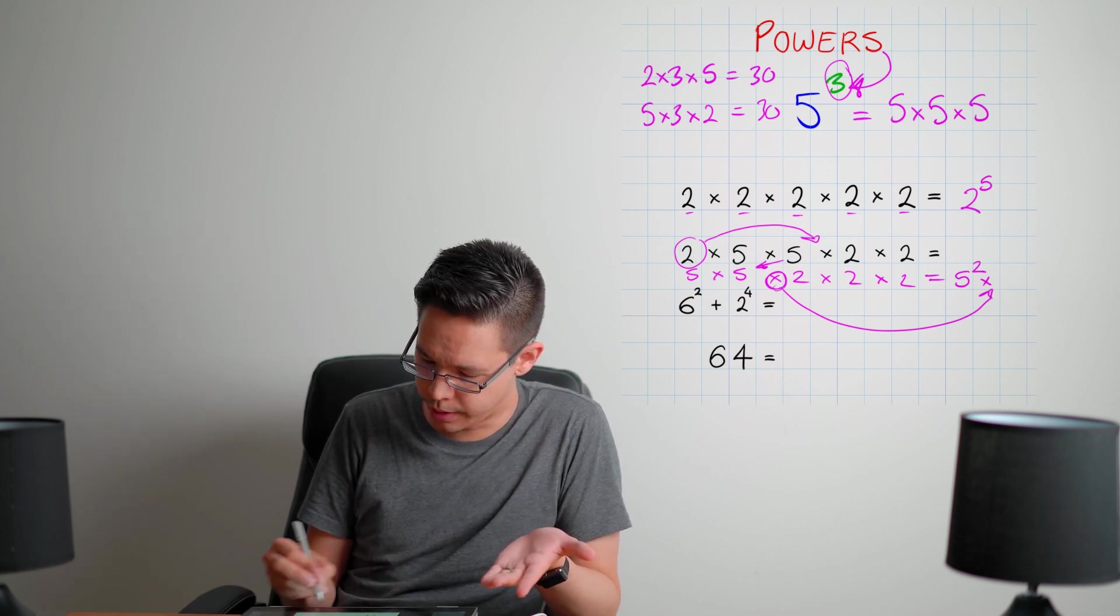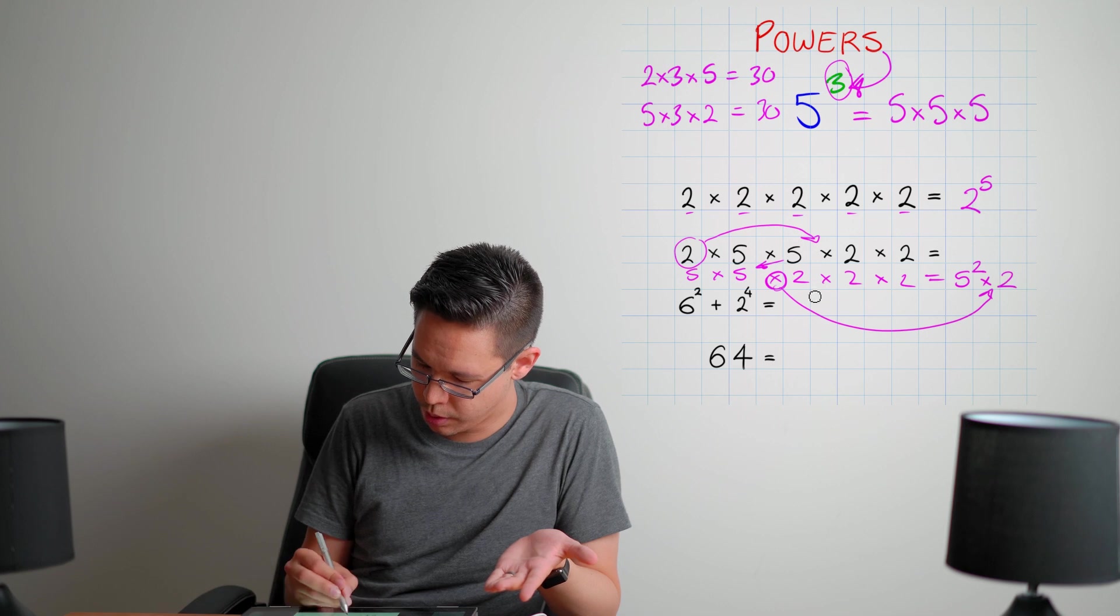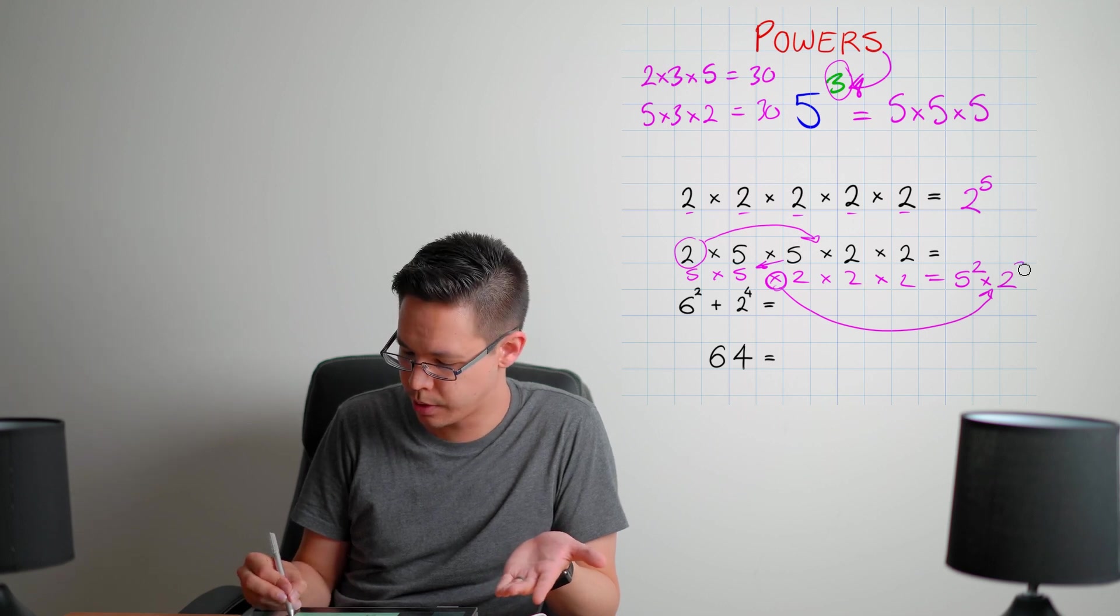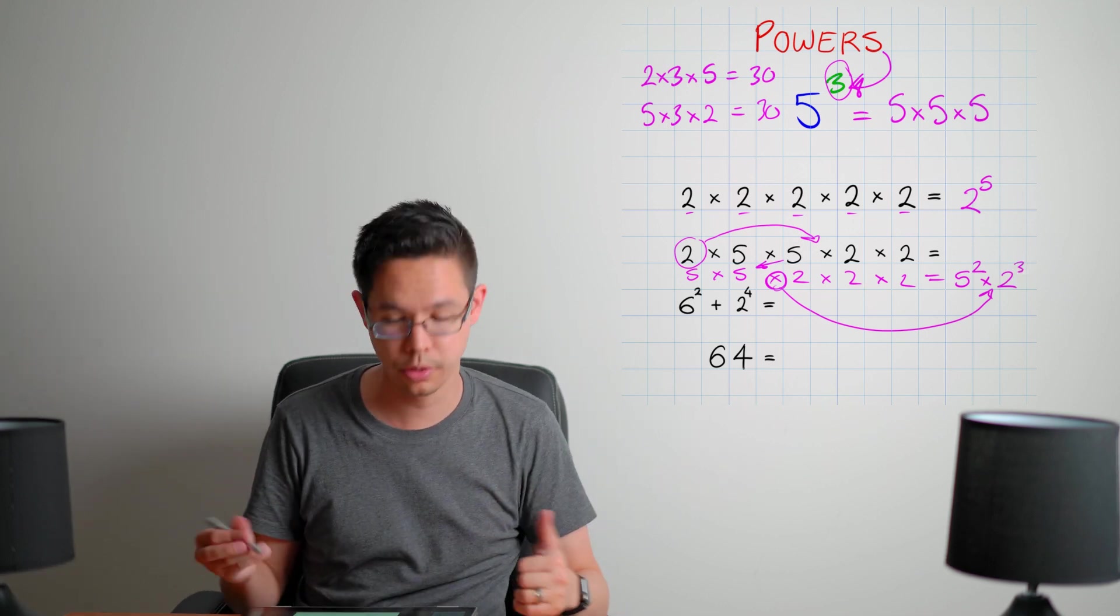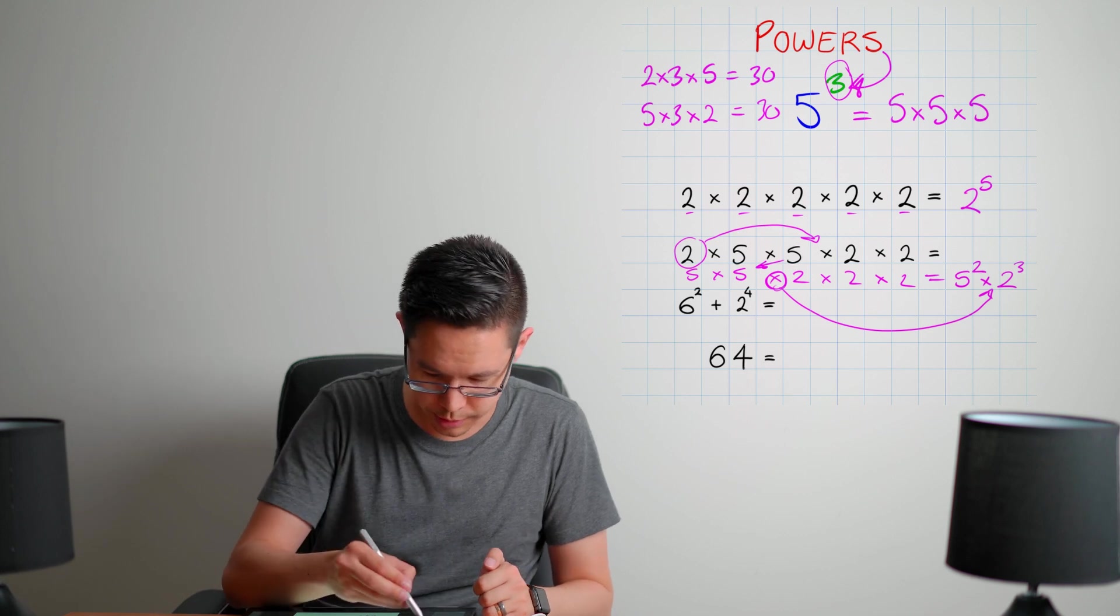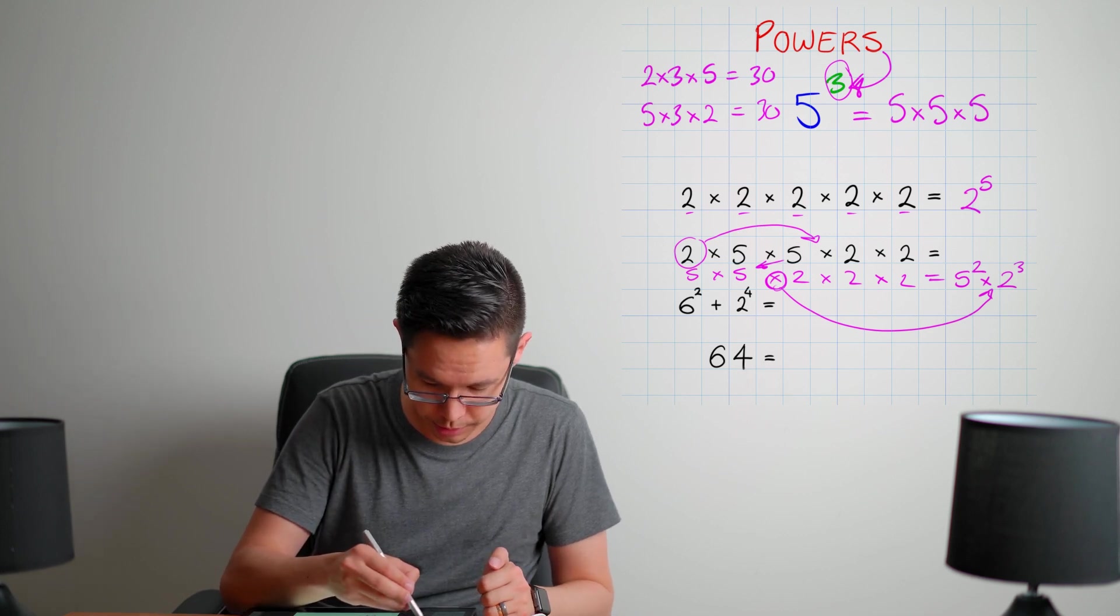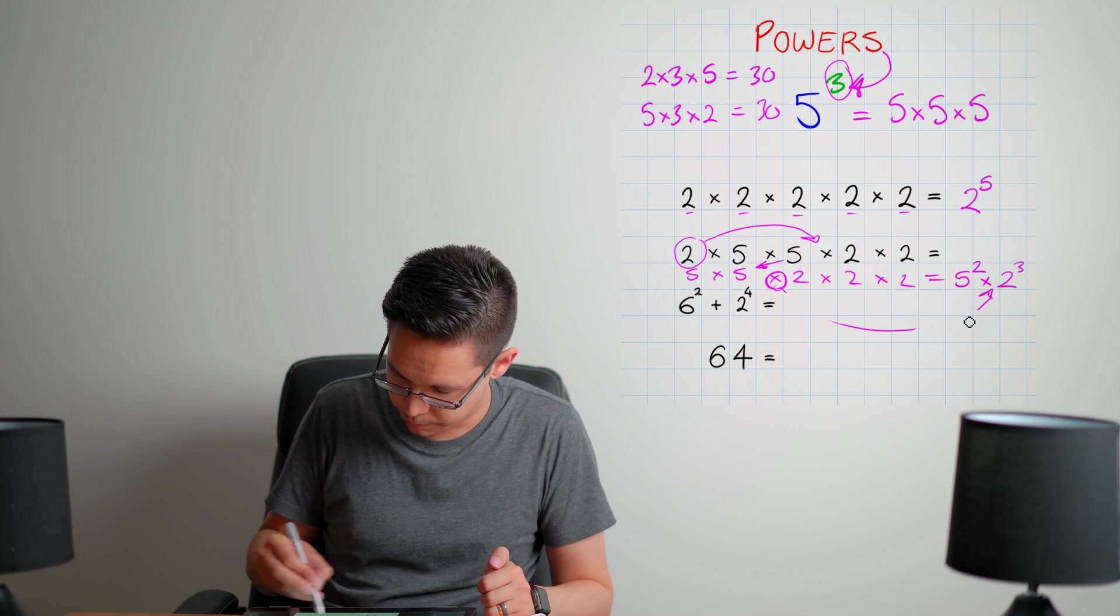Five squared times two, one, two, three times - that's two to the power of three or two cubed. Oh, gee, I need to erase a little bit here. So for the next question, let me just rub this out a little bit.